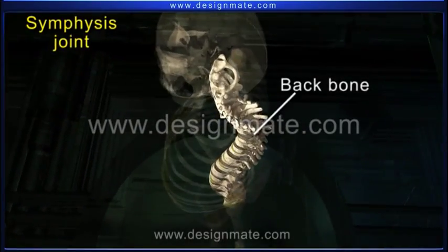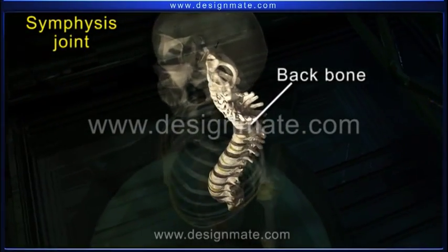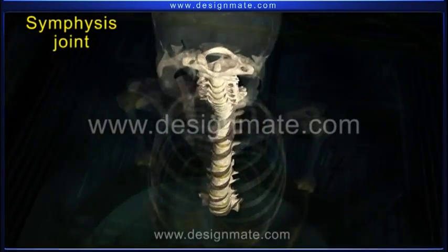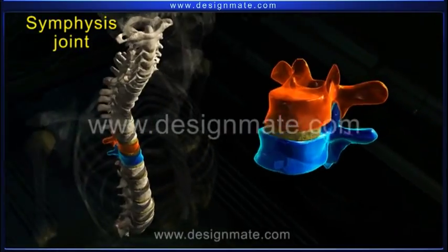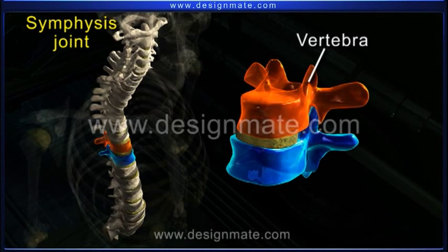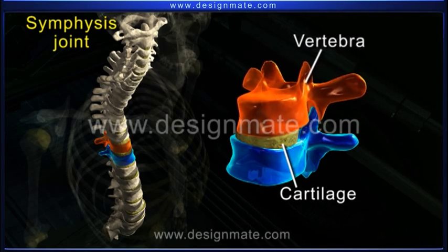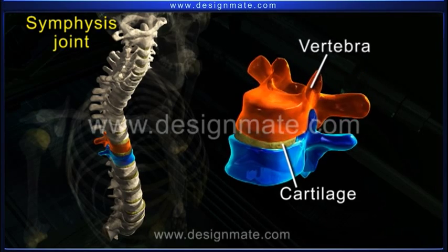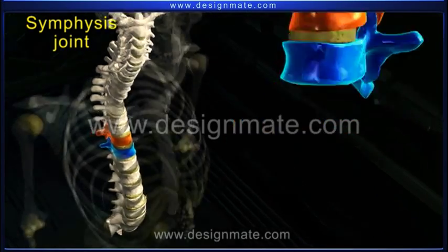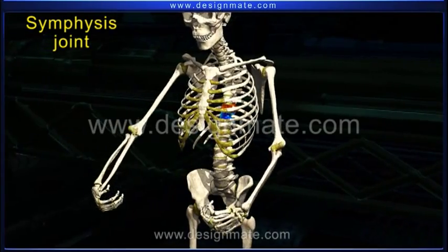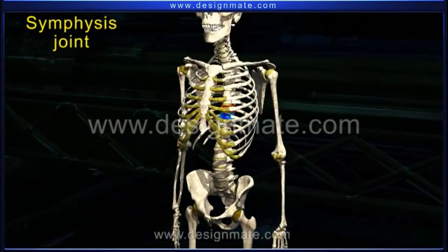The next type of joint is also seen between the vertebrae of the backbone. They are known as the symphysis, and the connection between the articulating bones is made up of a tough cartilage. There is very little movement between these joints, and the symphysis joint helps in the bending movement of the spine.